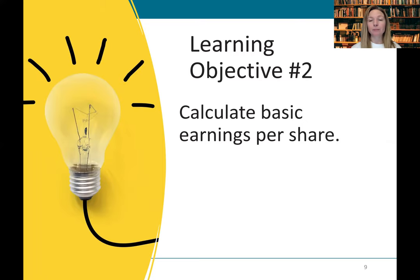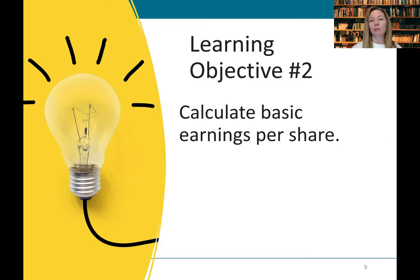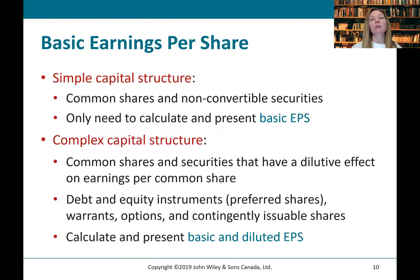Learning objective number two: calculate basic earnings per share. We've talked about the theory in learning objective one, and now we're going to get into the calculations. There are two types of capital structures a company can have. A simple capital structure has only common shares and non-convertible securities, and we only need to calculate and present basic EPS if there are no convertible securities.